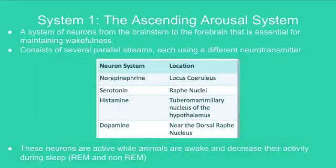Two main systems of neurons regulate the mammalian sleep-wake cycle. The first system is the ascending arousal system — a system of neurons from the brainstem to the forebrain that is essential for maintaining wakefulness. It consists of several parallel streams, each using a different neurotransmitter.